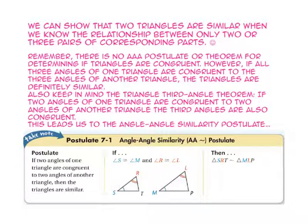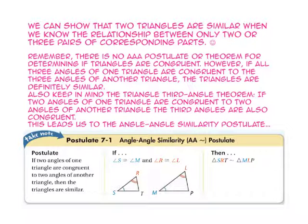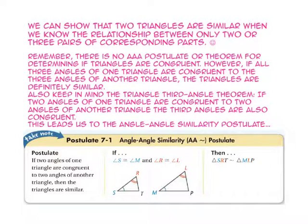Also keep in mind the triangle third angle theorem. If two angles of one triangle are congruent to two angles of another triangle, then the third angles are also congruent. This leads us to the angle-angle similarity postulate, which says if two angles of one triangle are congruent to two angles of another, then the triangles are similar.